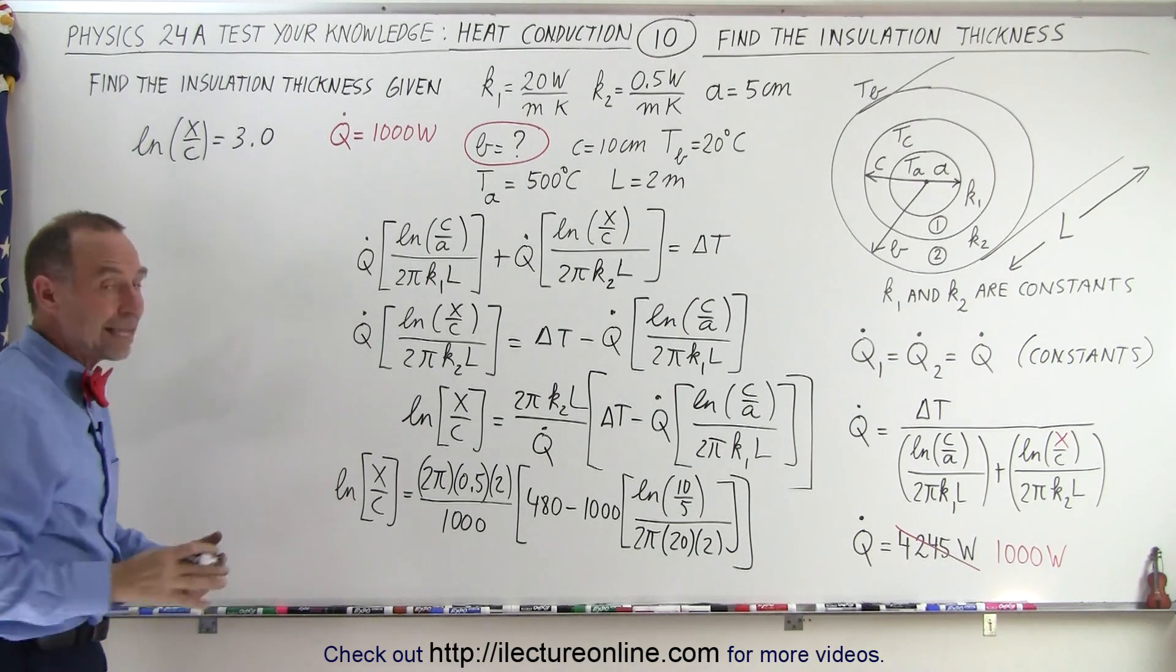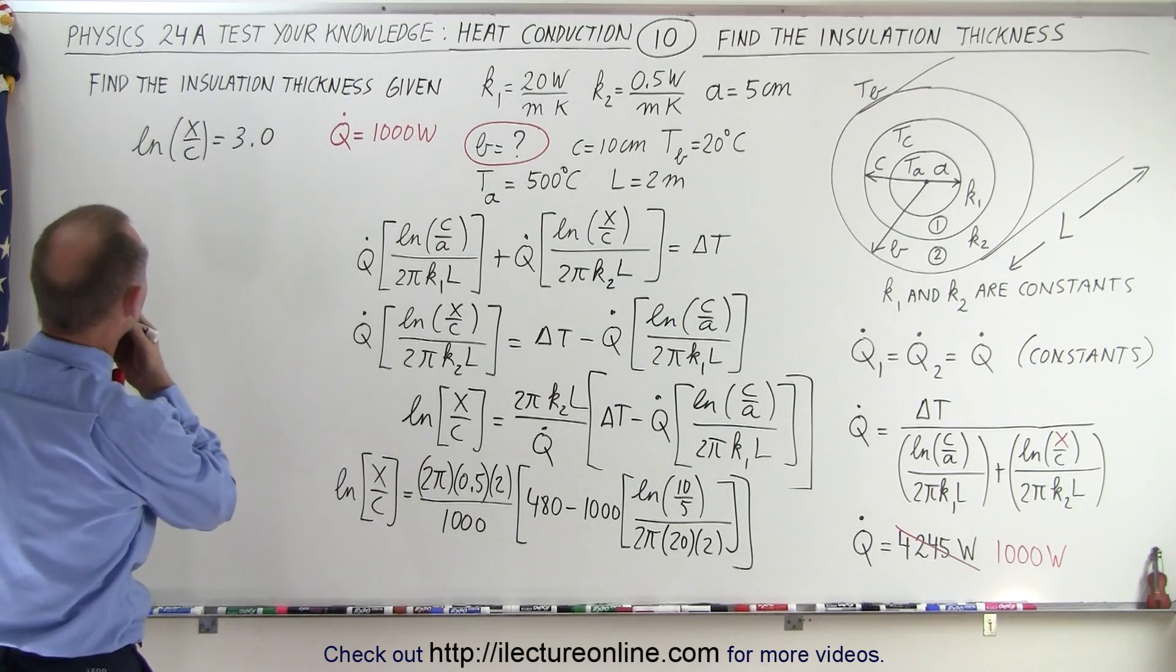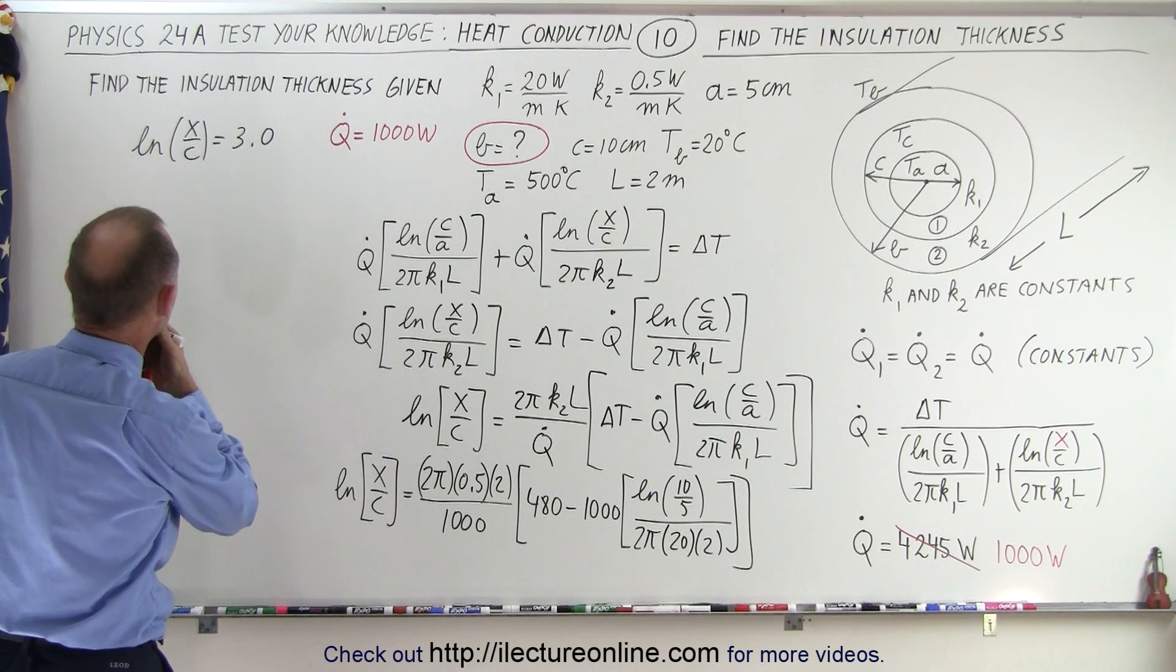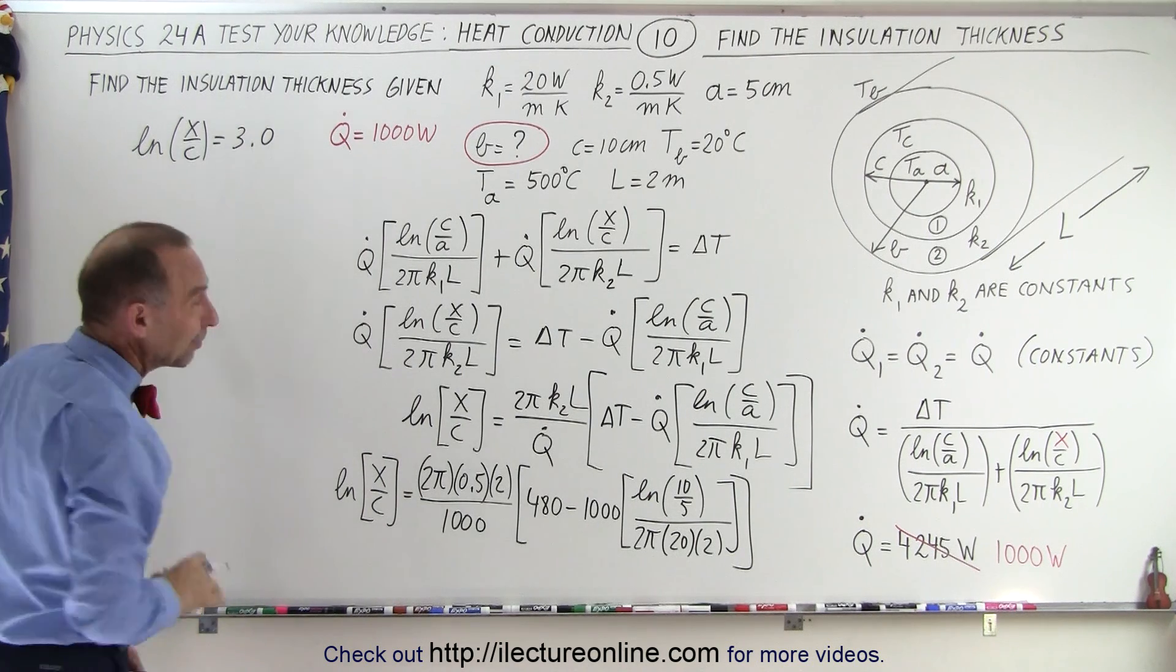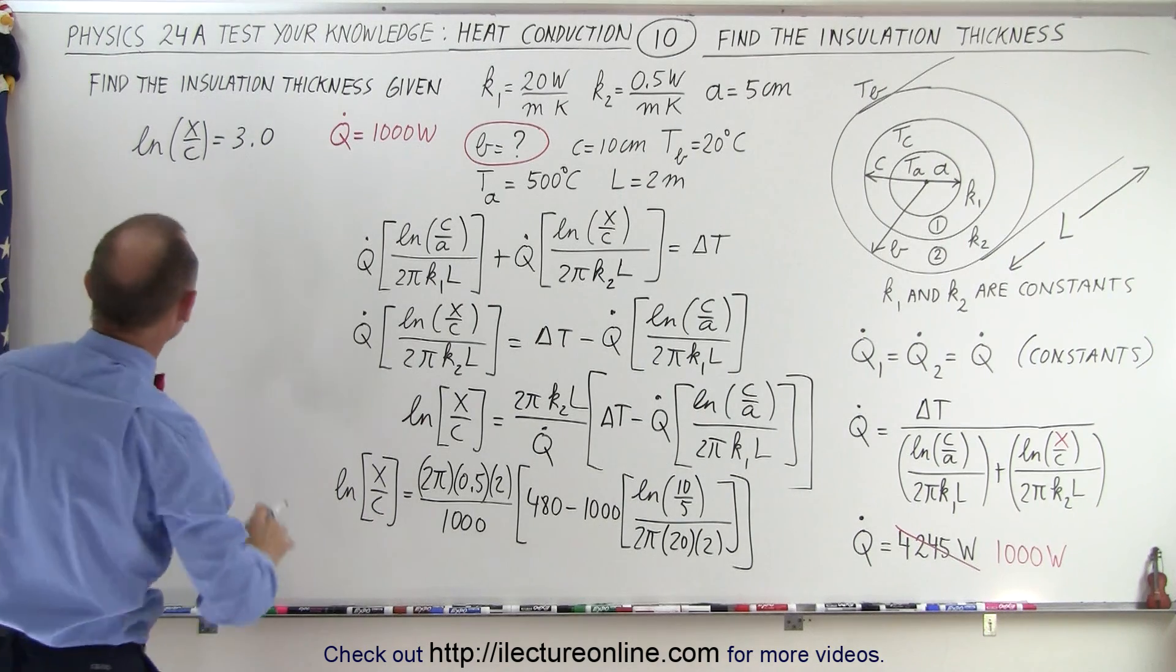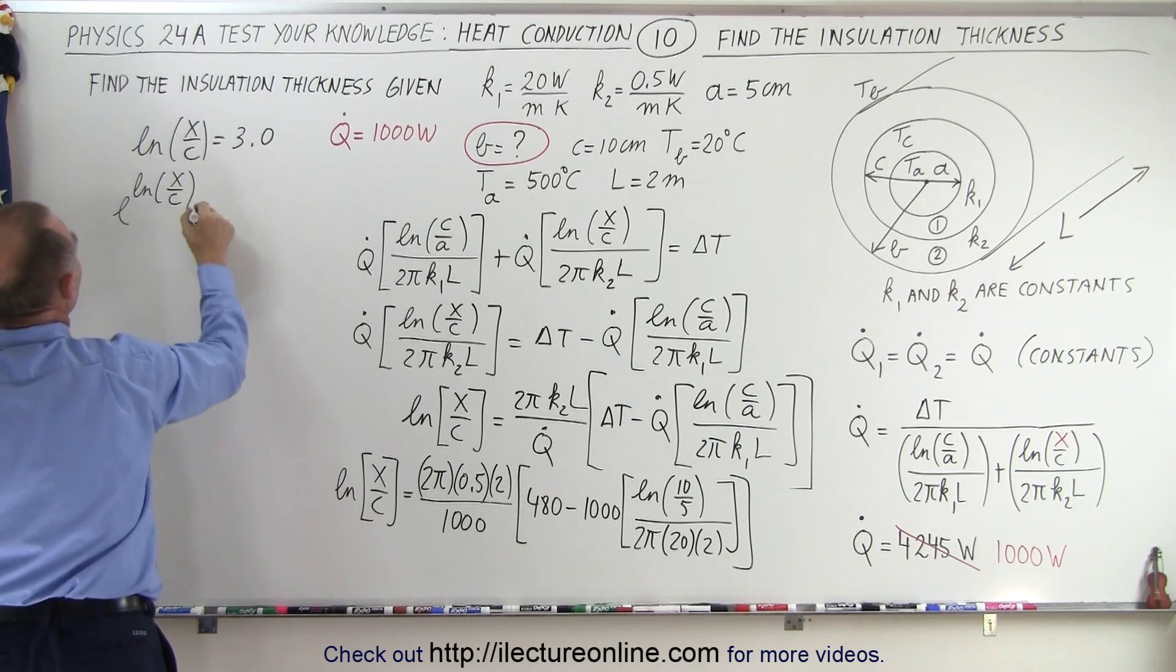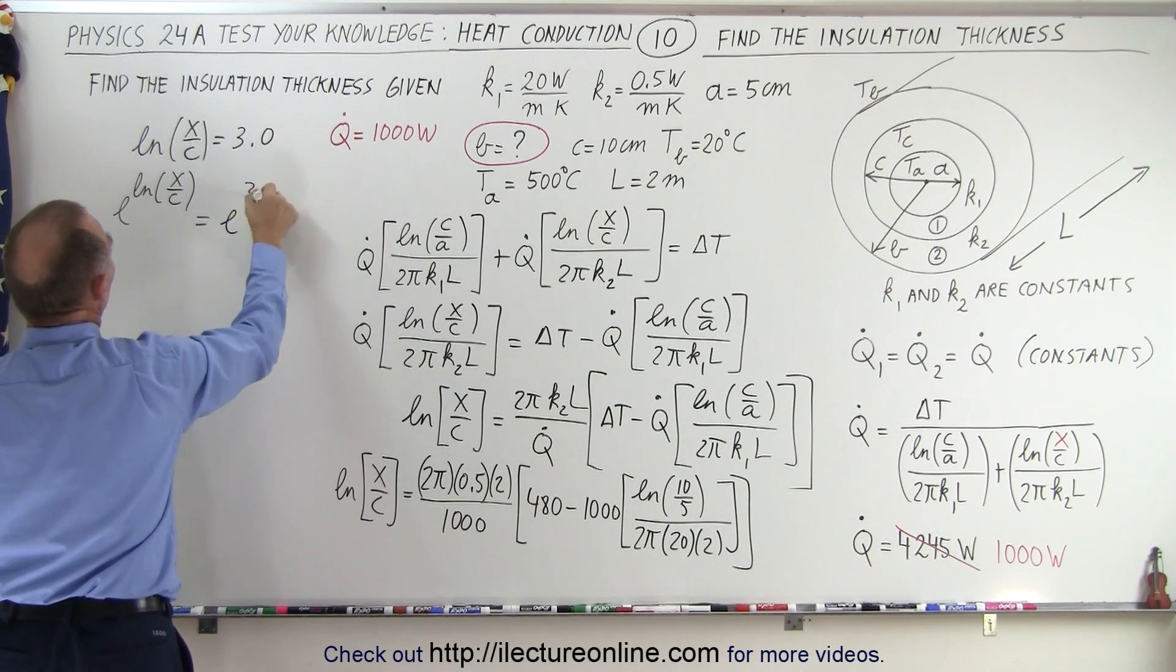So now, if we take the, what do we call it, the anti-log, I was just trying to think of the name, the anti-log. So we're going to e raised to the natural log of x over c is equal to e to the 3.0.